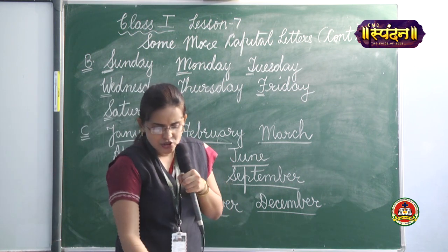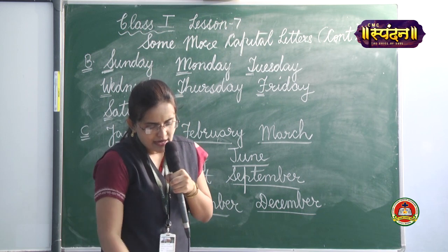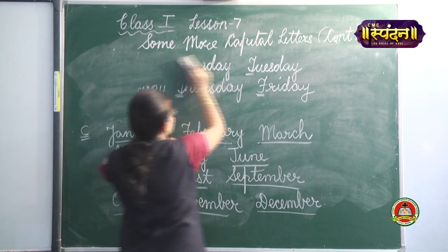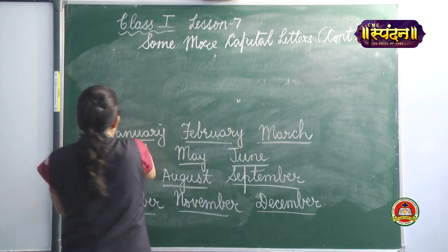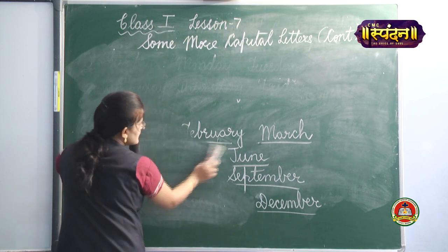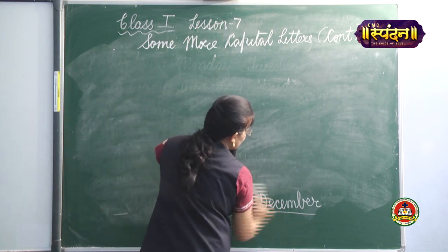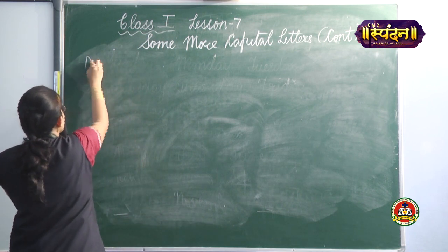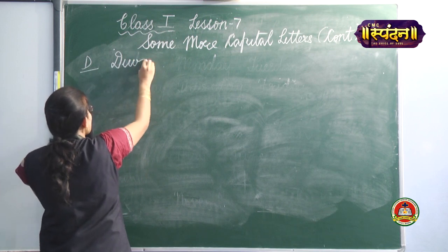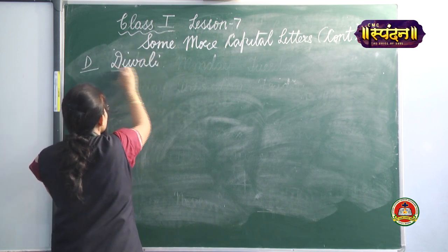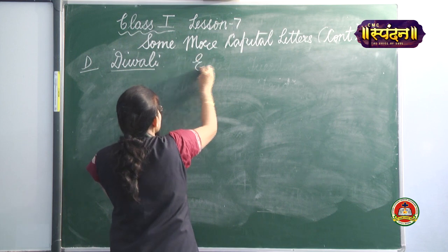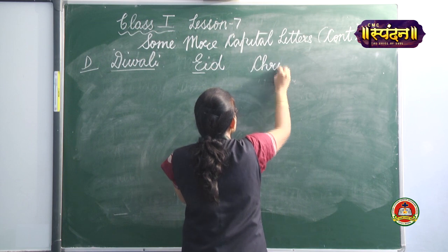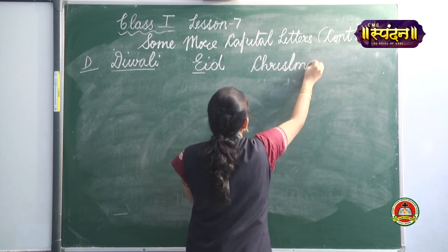Now you have to change your page and come on to Exercise D: Write the names of any three festivals. You have to write the names of any three festivals and you know that a festival's name will always begin with a capital letter. So here I can write Diwali — D will be in capital. I can write Eid — E will be in capital. And I can write Christmas — C will be in capitals.